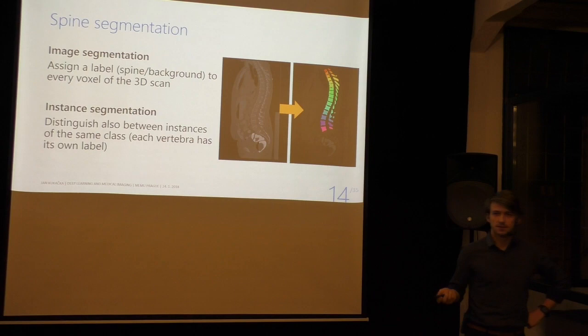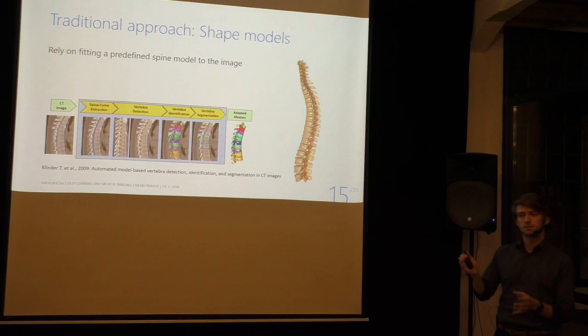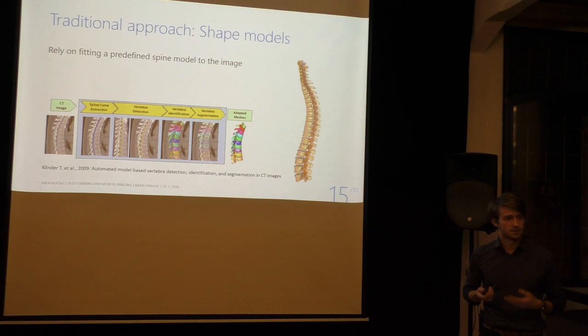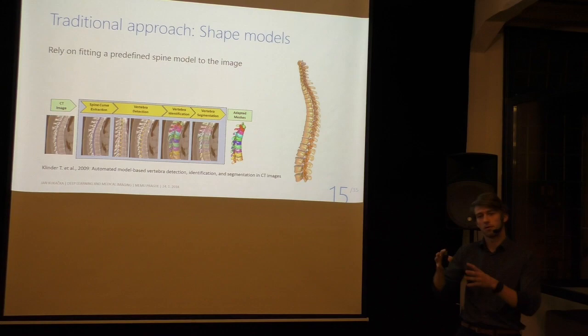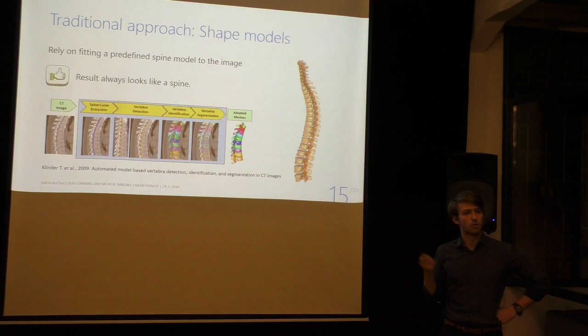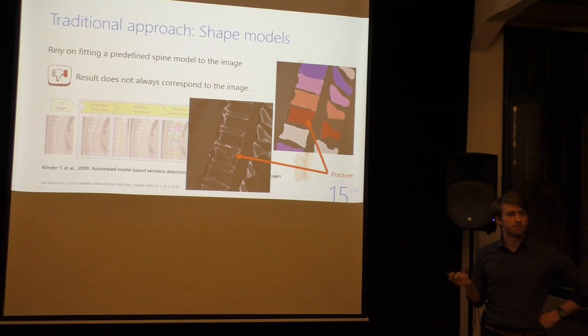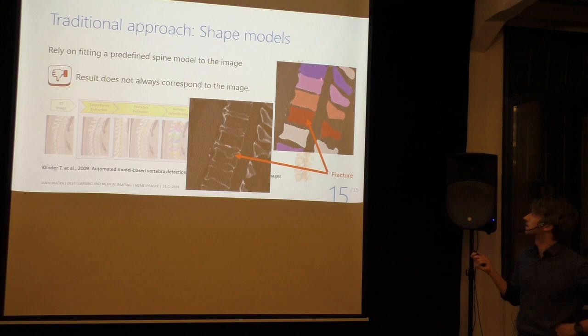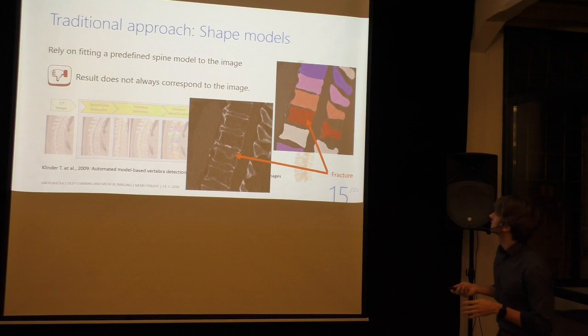How this is typically done is with shape models. You take scans of lots of people and build a mean model of how the average person's spine looks. When you get a new image, you try to fit this model into the image as well as possible, using a set of transformations to warp and perturb it. It's a multi-step pipeline with the benefit that whatever comes out will always look like a spine. However, it won't always look like the spine you want to segment — here you can see part of a vertebra is missing but the model doesn't care, or vertebrae overflow into one another. This was great in 2009 but is not great in 2018.